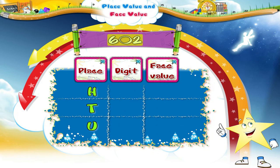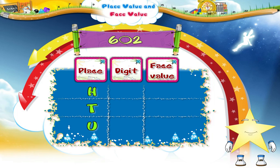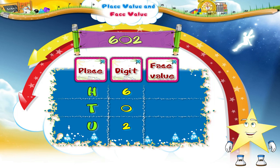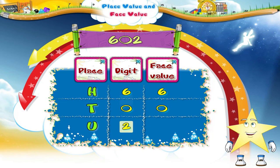Look at the number closely, Starry. It has the digits six, zero, and two. Now the face value of six is six, the face value of zero is zero, and the face value of two is two.